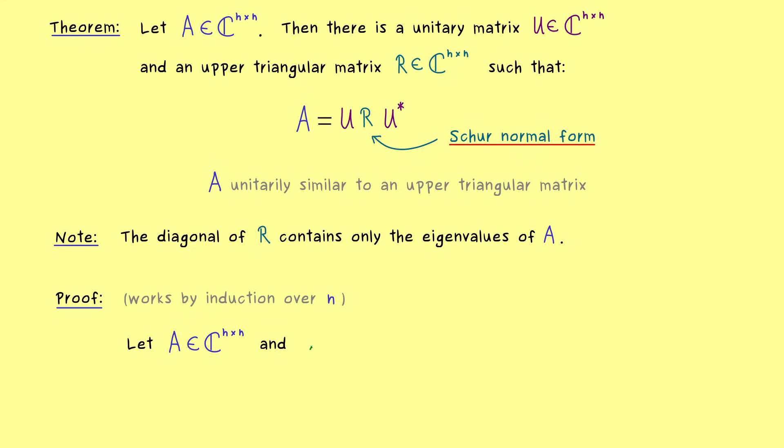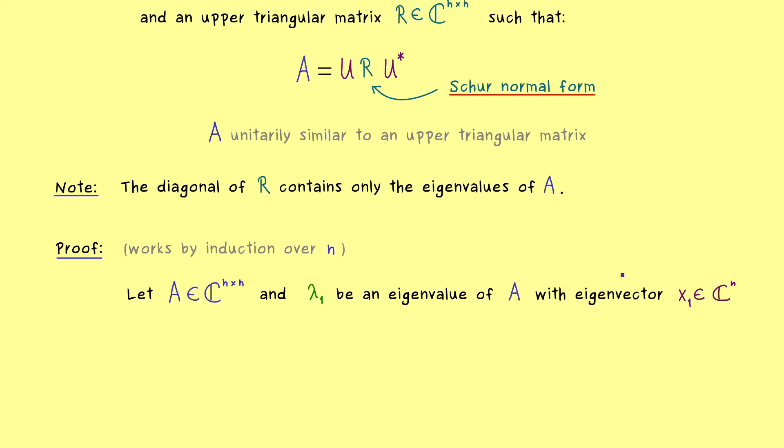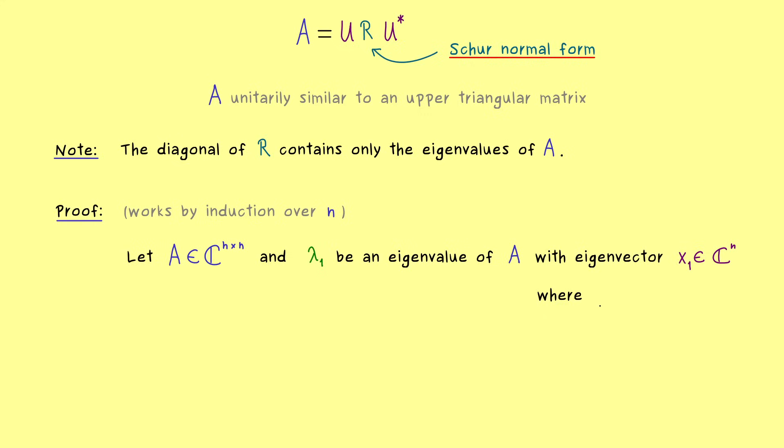The idea is quite simple. Just take any eigenvalue from A and call it lambda_1. This one always exists and it has at least one corresponding eigenvector. And this given eigenvector we will call x_1. And since it cannot be the zero vector, we are always able to scale it such that the length is equal to 1. So we take the standard norm of C^n and put in x_1 and we want that this is equal to 1. So this is always possible and needed, because we want to have an ONB for our matrix U.